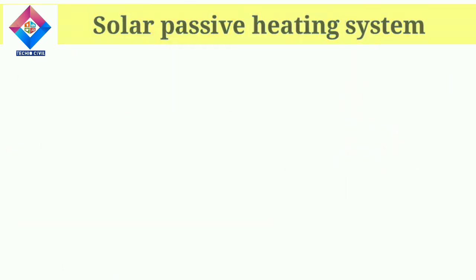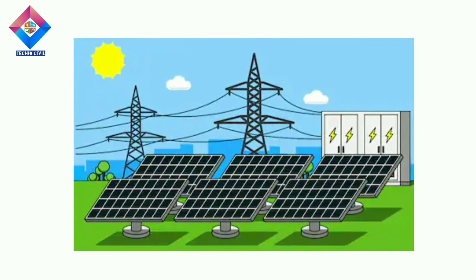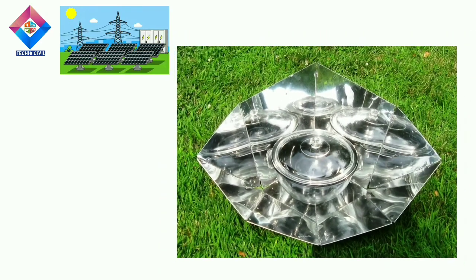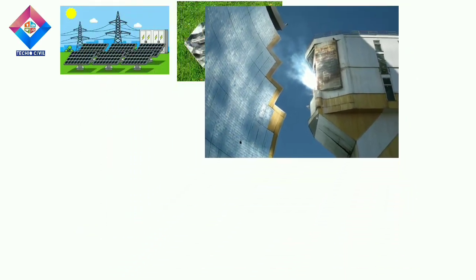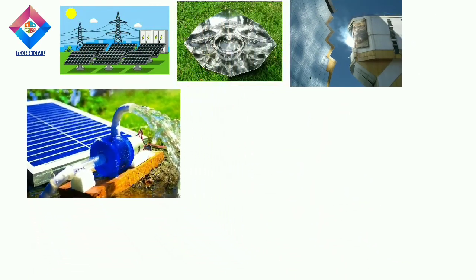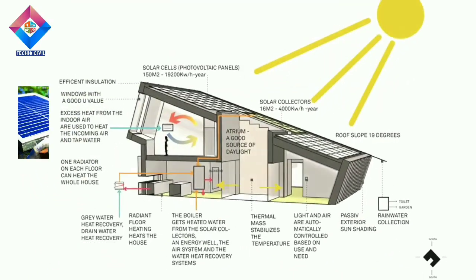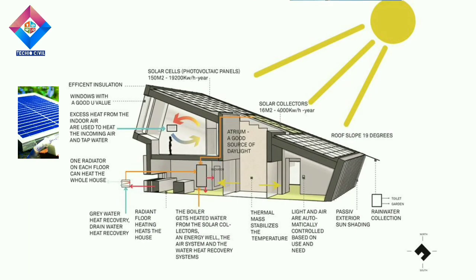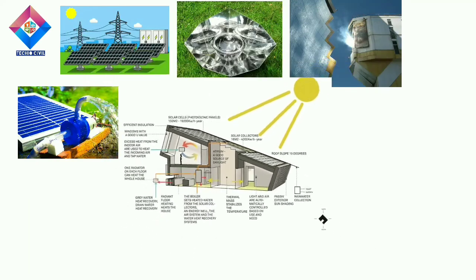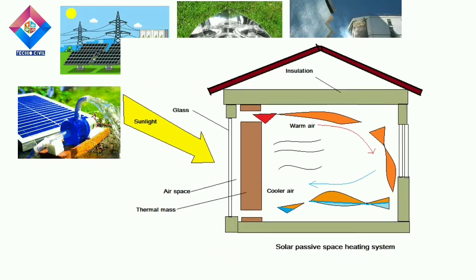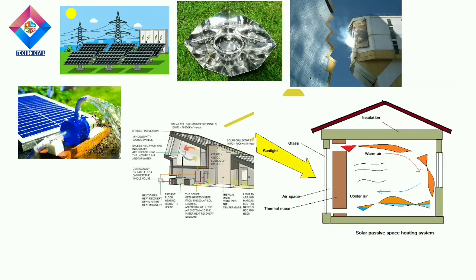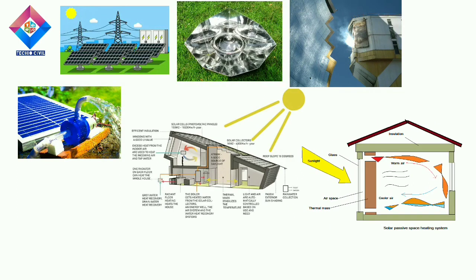At the present time, solar energy is used in different applications like generating electricity, cooking, furnace of metal, pumping of water, and so on. But solar energy is also used for heating or cooling a building to maintain a comfortable temperature inside the house. This temperature is maintained by the use of the solar passive space heating system.